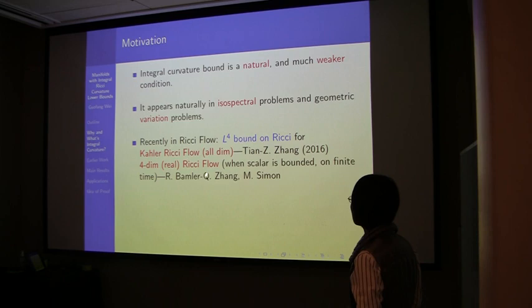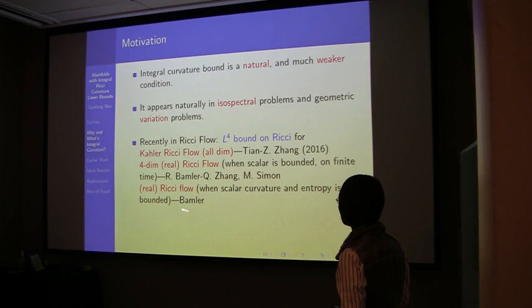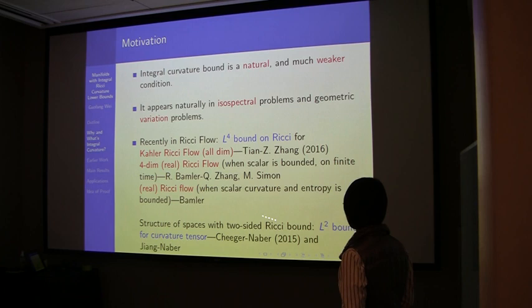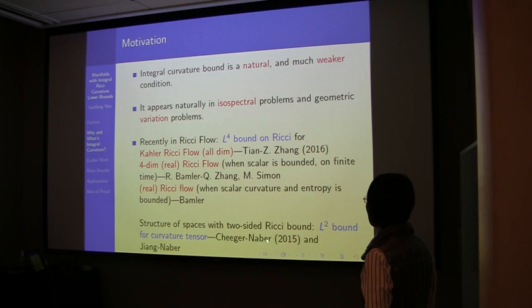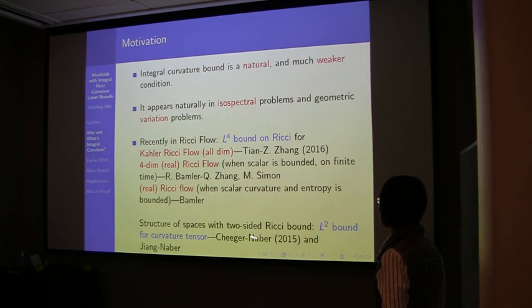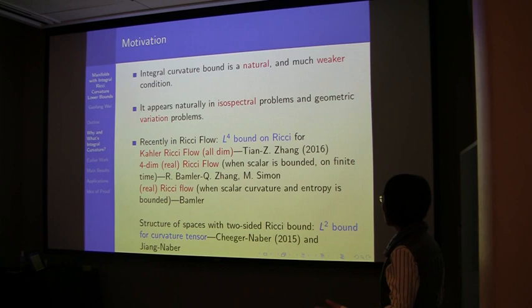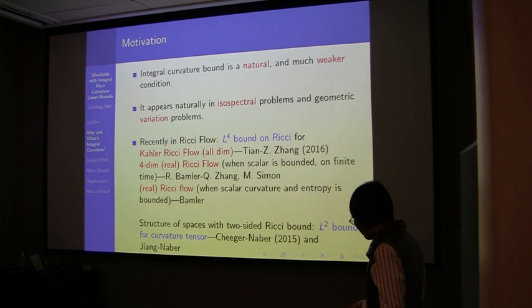This was extended by Richard Bamler, John Lott, and Miles Simon, and later Bamler's work was really motivated by earlier work of Cheeger and Naber and Jiang and Naber — they showed that if you have Ricci curvature bounded on both sides and non-collapsing, then you automatically have an L2 curvature bound on the integral of the curvature tensor. This extends to Ricci flow when you assume scalar curvature is bounded and entropy is bounded, so in those cases you automatically have some kind of integral curvature bound.